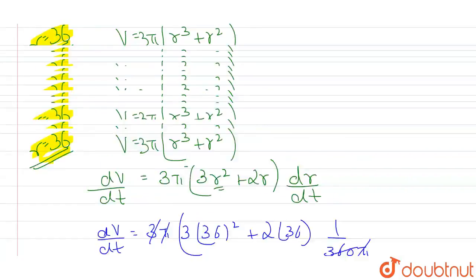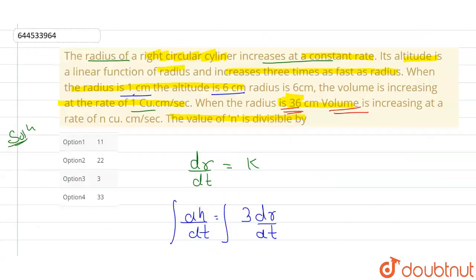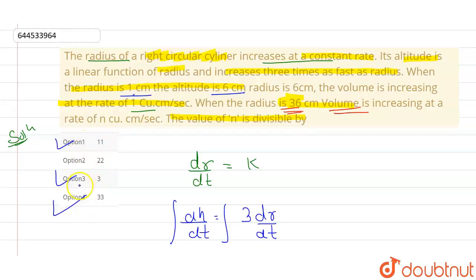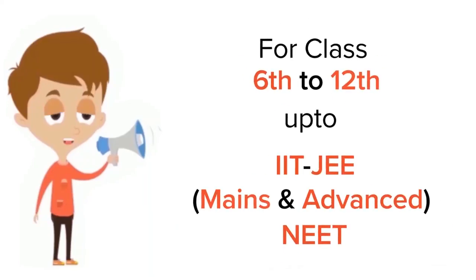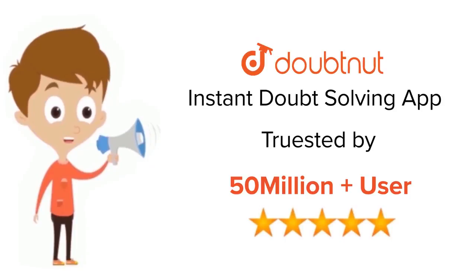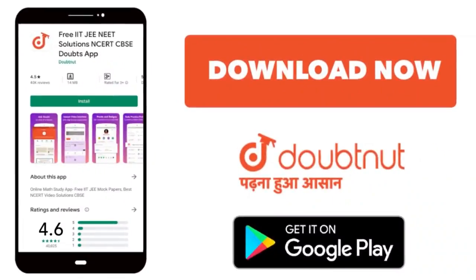So dV/dt is 33 cm³/s when r = 36. The value 33 is divisible by 11, by 3, and also by 33 — so the answers are option 1, option 3, and option 4. For class 6 to 12, IIT JEE and NEET level, trusted by more than five crore students — download the DoubtNet app today.